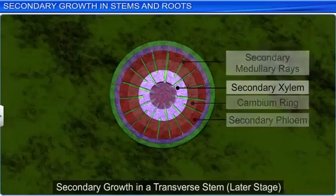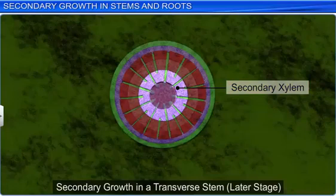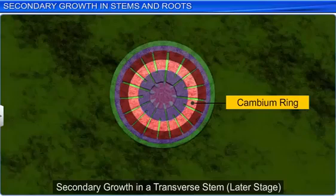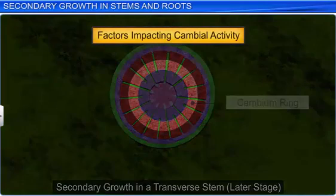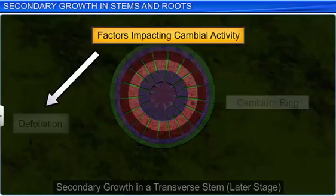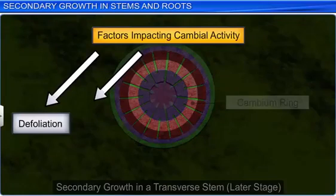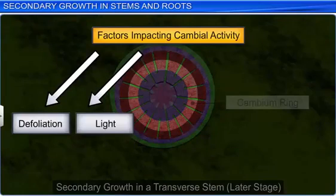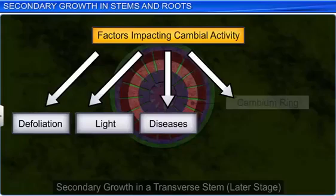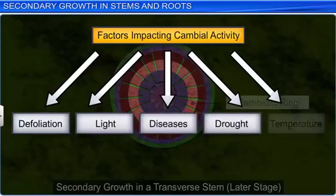The secondary xylem tissues formed during cambial activity give rise to commercial wood. This cambium activity is impacted by several physiological and environmental factors, such as defoliation, light, diseases, drought, and temperature.